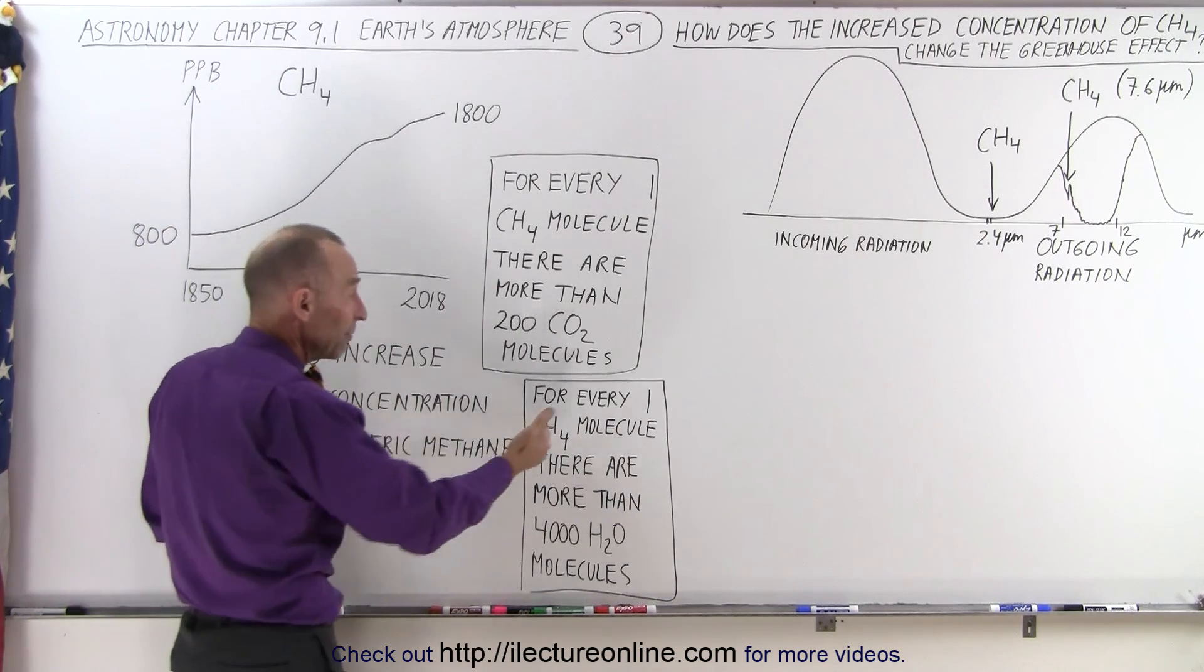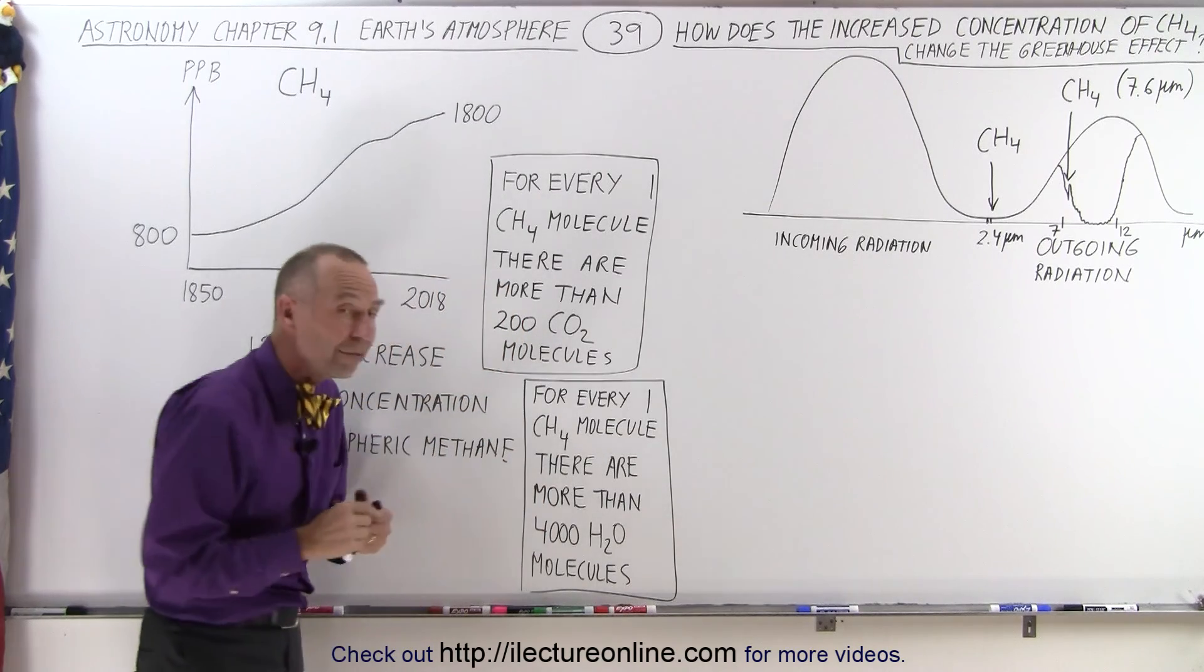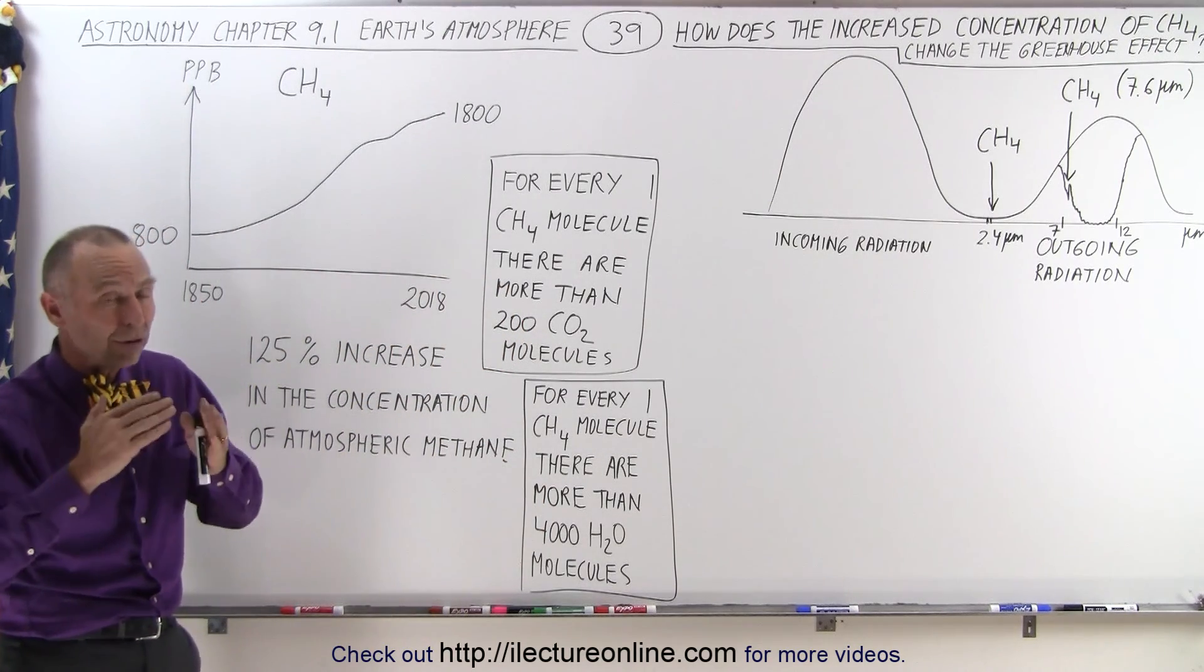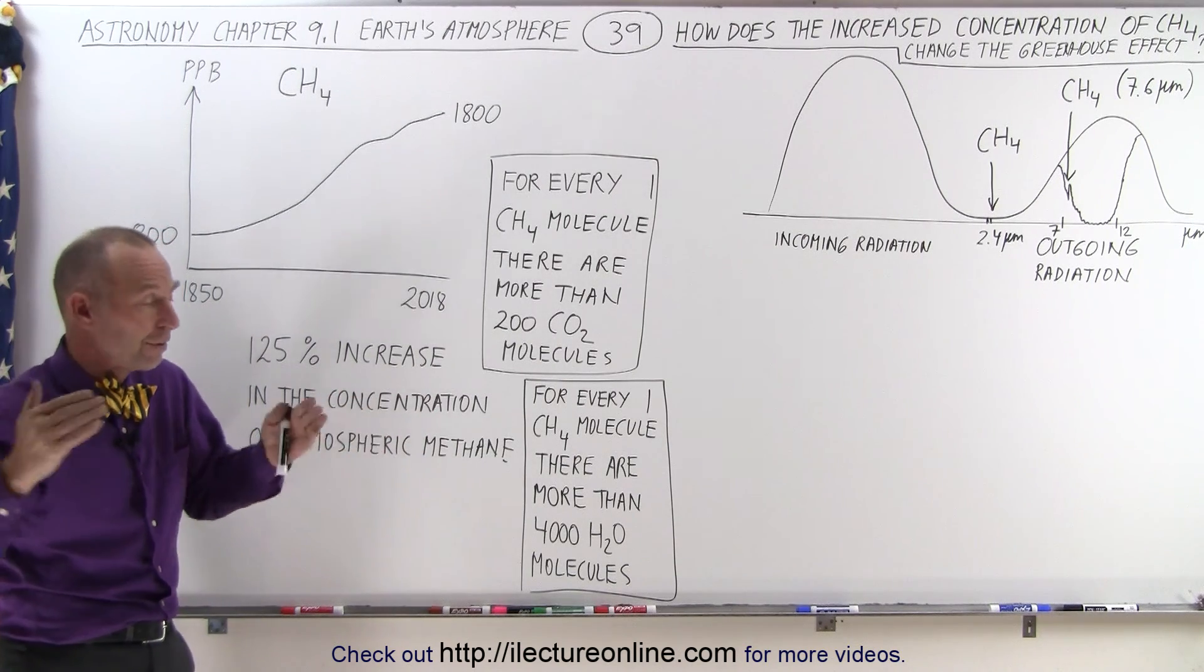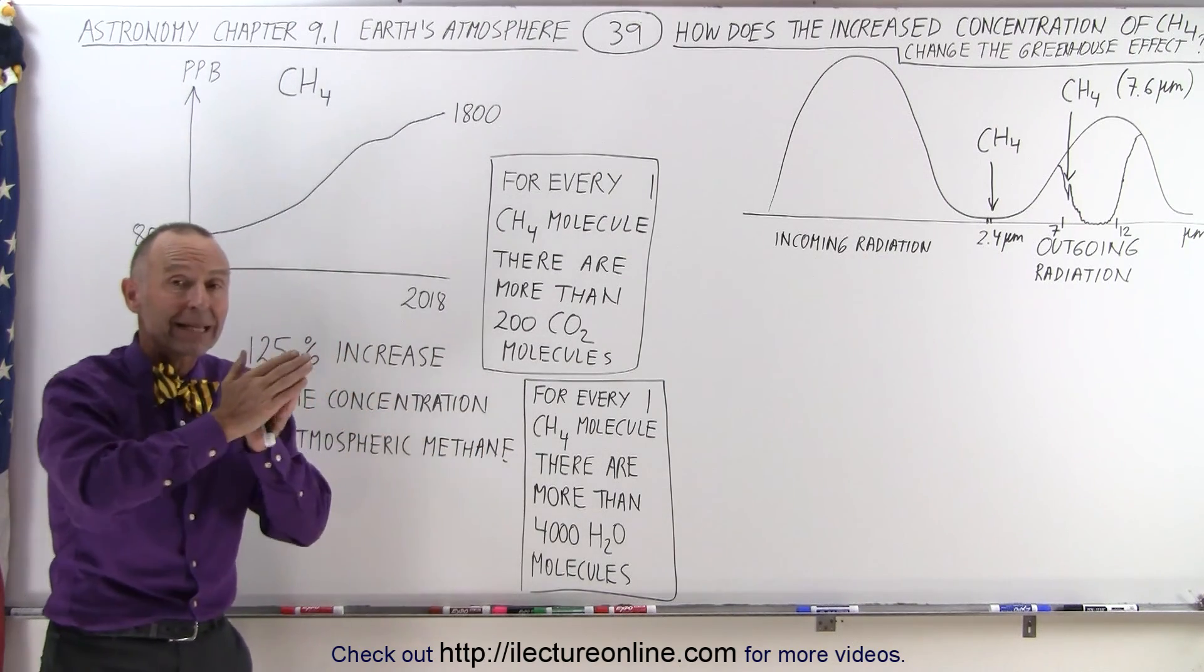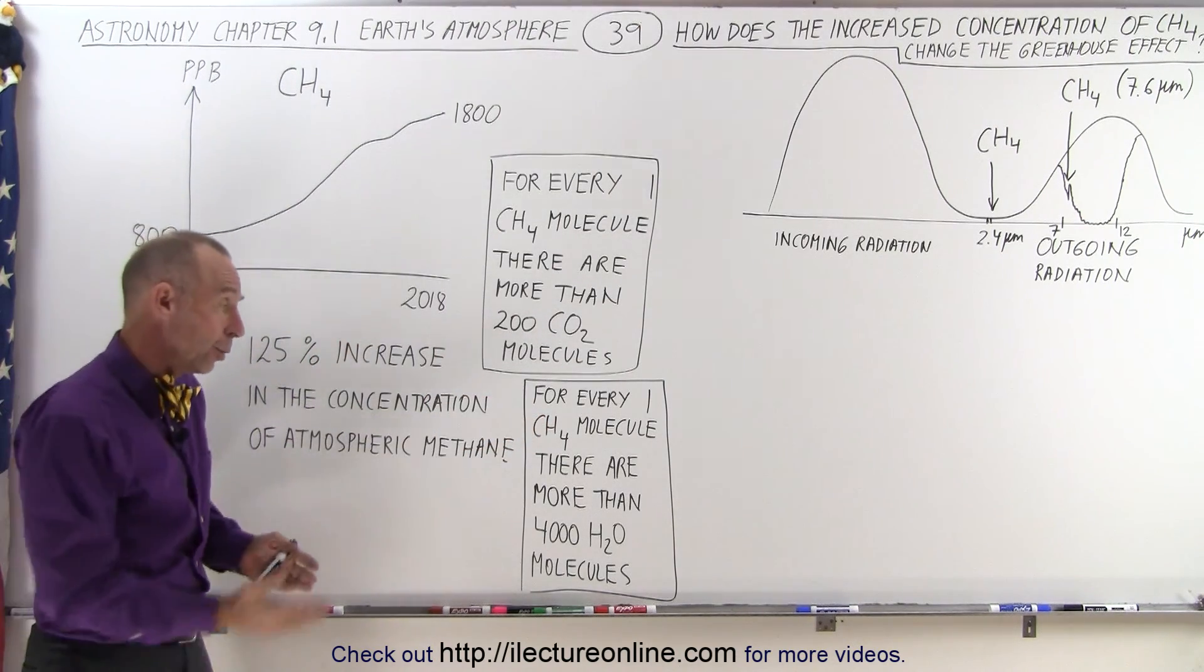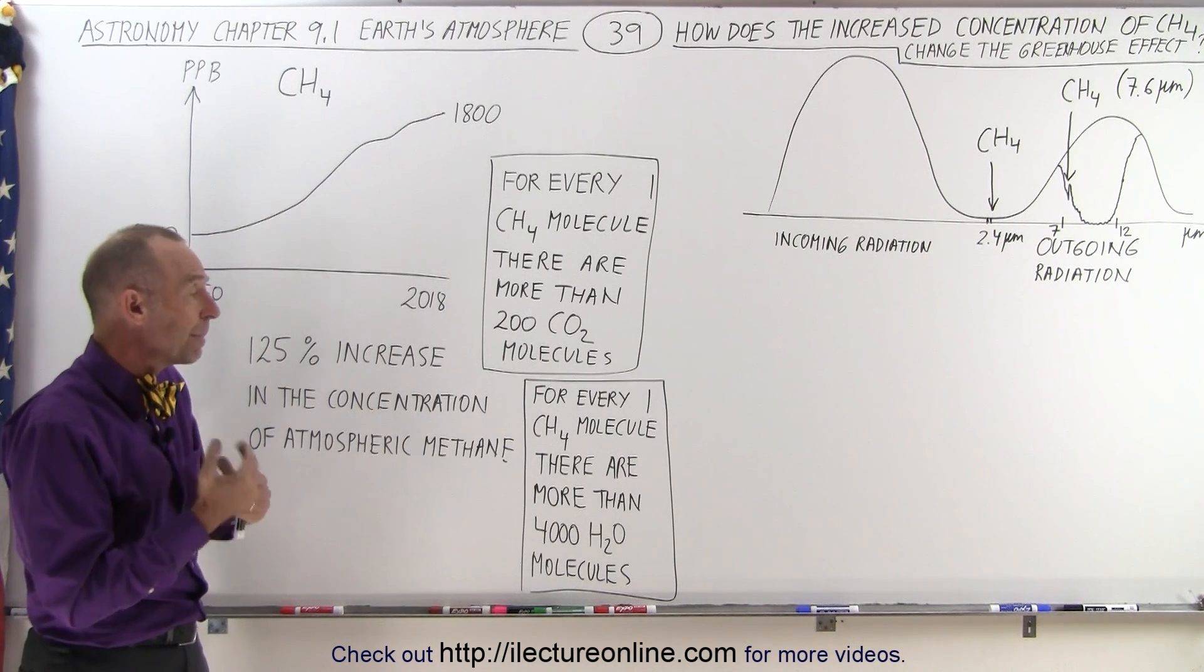Compared to water vapor, for every one methane molecule, there are more than 4,000 water vapor molecules. And we know that water vapor is able to hold back many more ranges of infrared radiation coming from the Earth. Therefore, not just by number, but simply by the kind of radiation it can hold back, water vapor is a much more effective greenhouse gas than methane.